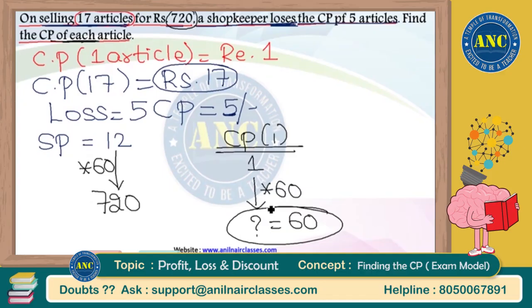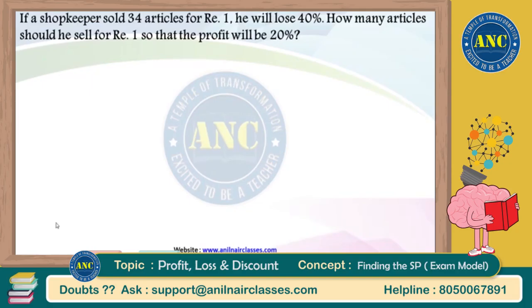For 1 article I pay 1 rupee. I purchased 17 articles so I paid 17 rupees. When selling those 17 articles I have a loss of 5 articles — 1 article is 1 rupee, so 5 articles = 5 rupees loss — meaning I sold for 12 rupees. The question says 720, so multiply by 60.